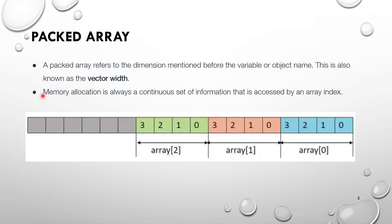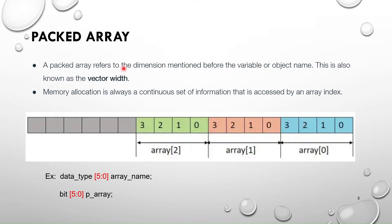We are storing elements linearly in a contiguous, single-dimensional manner. If you see the syntax you can understand better: the data type, vector width, and array name — the dimension is mentioned before the variable name. For example, `bit [5:0] p_array` — since it's a single dimension array, it is a packed array of 6 bits (0 to 5). The dimension is before the object name, so it is called a packed array.